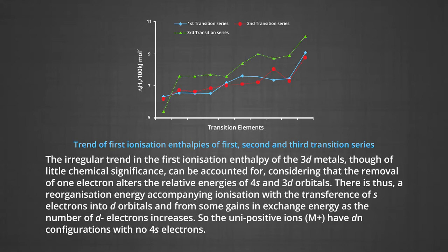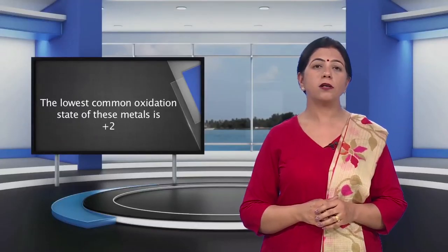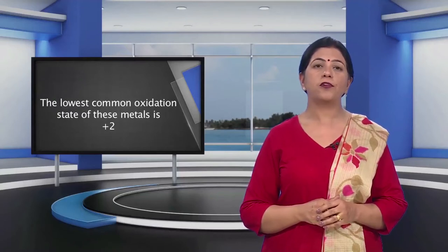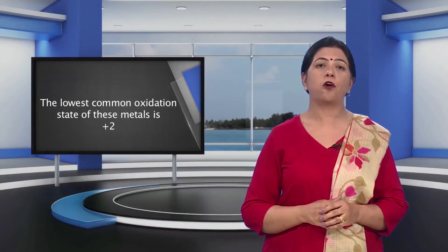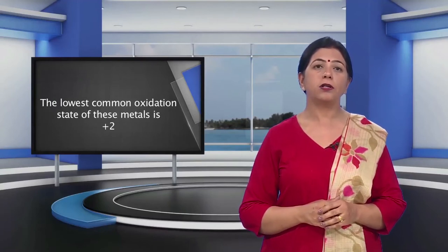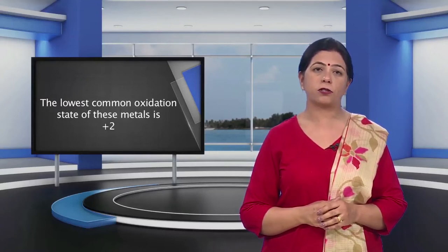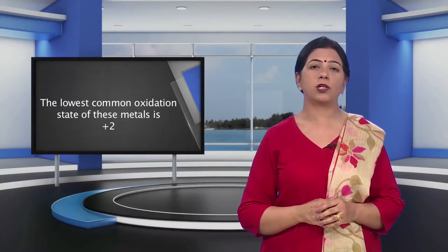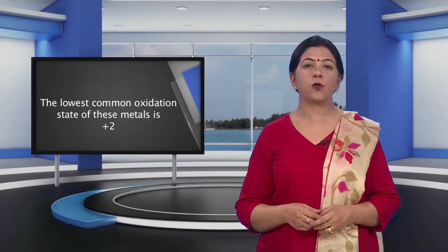The lowest common oxidation state of these metals is +2. To form M2+ ions from gaseous atoms, the sum of the first and second ionization energies is required in addition to the enthalpy of atomization. The dominant term is the second ionization enthalpy, which shows unusually high values for chromium and copper, where the D5 and D10 configurations of M+ ions are disrupted with considerable loss of exchange energy.